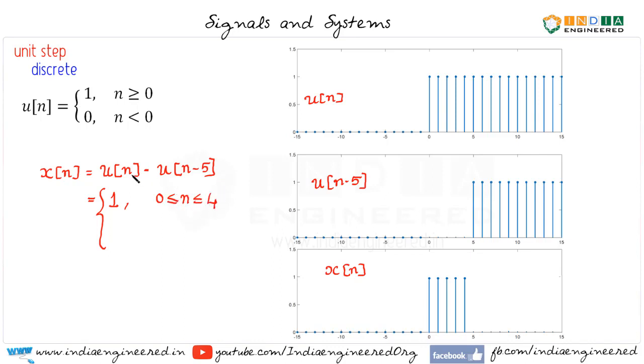Always remember u(n) minus u(n-5) has value 1 for 0 less than or equal to n less than or equal to 4, not 5. Always remember that. Its value is 0 otherwise.